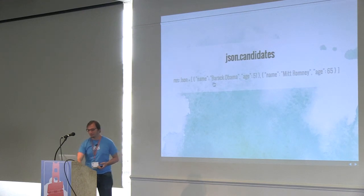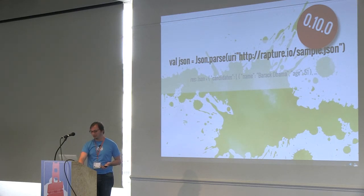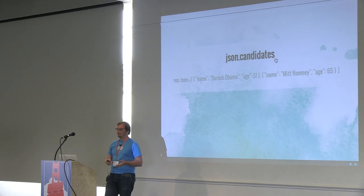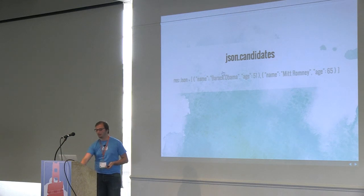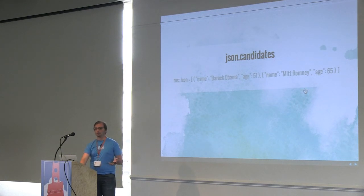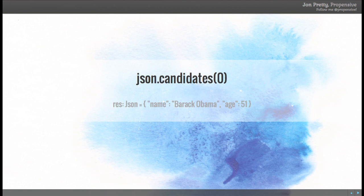What can we do with this JSON? We have a map with a candidates element which is an array. I can just call .candidates on that. This uses Scala's Dynamic trait - I could call .anything - and it assumes that value exists and effectively dereferences it. When it calls toString in the REPL, we get a string representation of the candidates. If we wanted the first one, we just apply 0 to it and it displays the zeroth element of that array.